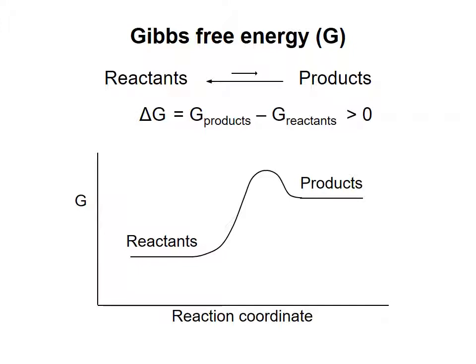To sum up, for any chemical reaction: if the delta G is negative, the forward reaction is favored. If the delta G is positive, the reverse reaction is favored. In either case, if undisturbed, the reaction will proceed in the favored direction until delta G equals zero and a dynamic equilibrium is reached.